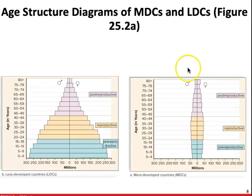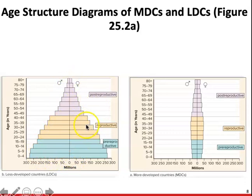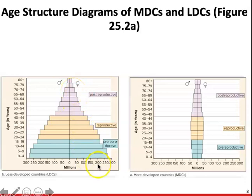Here's an example of age structure diagrams. In a less developed country, the largest group is the pre-reproductive stage, followed by the reproductive and post-reproductive stages. Those in the reproductive stage are having more offspring than they are replacing — instead of two children per couple, we're seeing three, four, or five children. A population with an age structure diagram shaped like this is going to be growing significantly and rapidly.